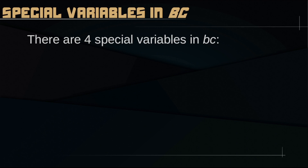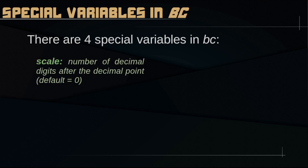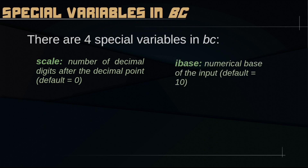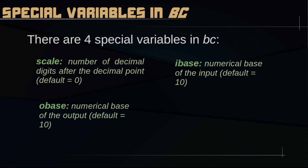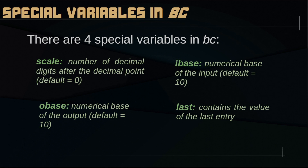There are 4 special variables in BC. The first is Scale — it's the number of decimal digits after the decimal point. By default it's 0, which means that calculations by default are integer only. This is very important to remember. Then, IBase is the numerical base of the input, defaulting to 10. OBase is the numerical base of the output, also defaulting to 10, but you can set it to 2 or 16 to visualize results in binary or hexadecimal. And then the last variable, called 'last', contains the value of the last entry.